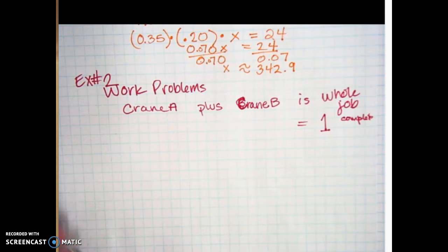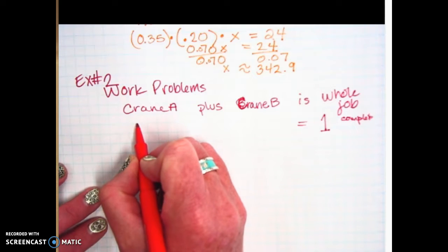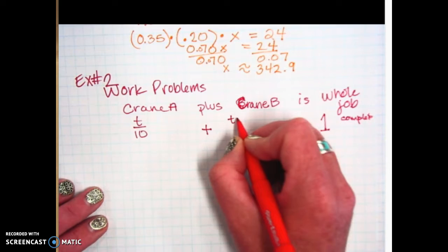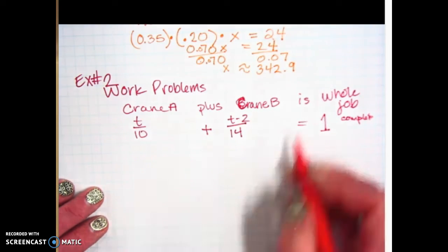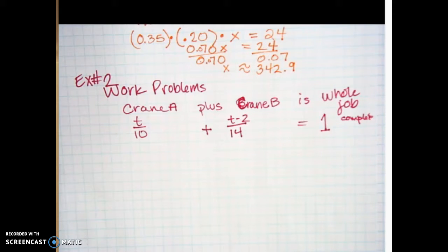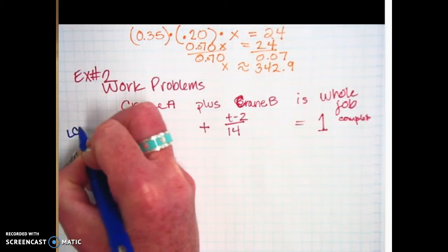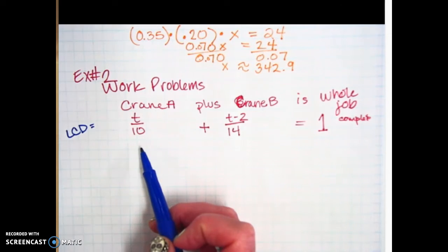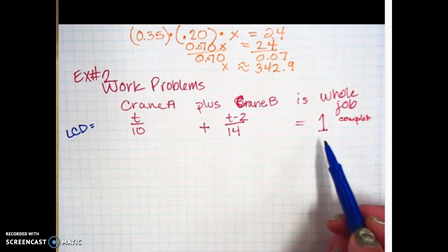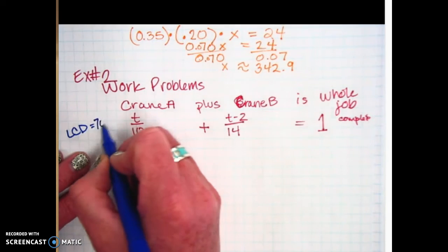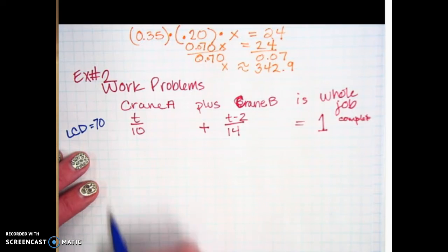In this case, whenever you have a whole job being done, it's going to be equal to one complete job. So this guy's going to do part of it, this guy's going to do part of it, it's going to equal the whole thing, which is just one job being done. So crane A is going to do it in one tenth, so we're going to call it T over 10, plus crane B is going to do it in T minus 2 over 14, is, we're going to put the equal sign. Just like the last section, we need to have what? The least common denominator.